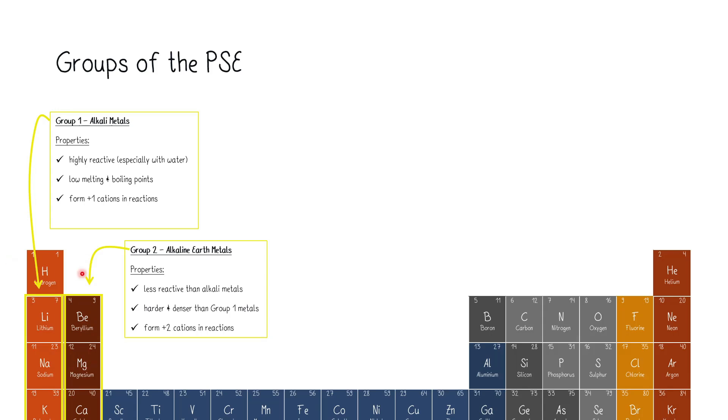The second group, one row to the right, that's group two. Those are the alkaline earth metals. They are a bit less reactive than the alkali metals. You will see by the rule of the progression of the group that that will also extend. And they are harder and denser than group one metals. And then since they're group two in the form of ions, they will be having the formal charge of plus two.